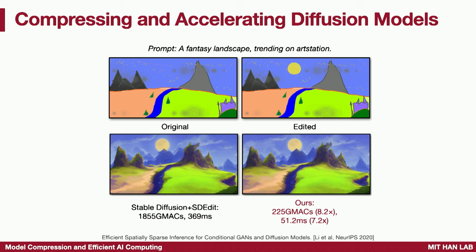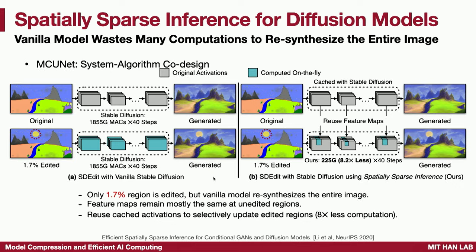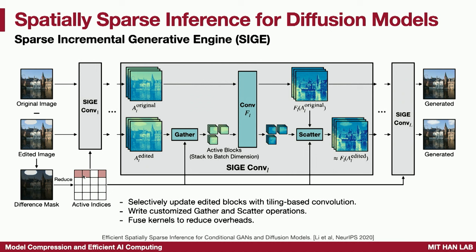Not only on language but also on image generation, we've put a lot of effort into accelerating diffusion models. When you want to edit a picture, sometimes the edited part is not the whole image — so why use compute to regenerate the whole image? By exploiting spatial sparsity to only compute on the edited region, we can reduce compute by 8x and reduce latency by 7x, for example when adding a sun. The idea is to extract only those edited parts — the active indices — and do a scatter operation to gather edited patches and pass them through convolution, then scatter back to their locations, so the convolution's workload is drastically reduced.